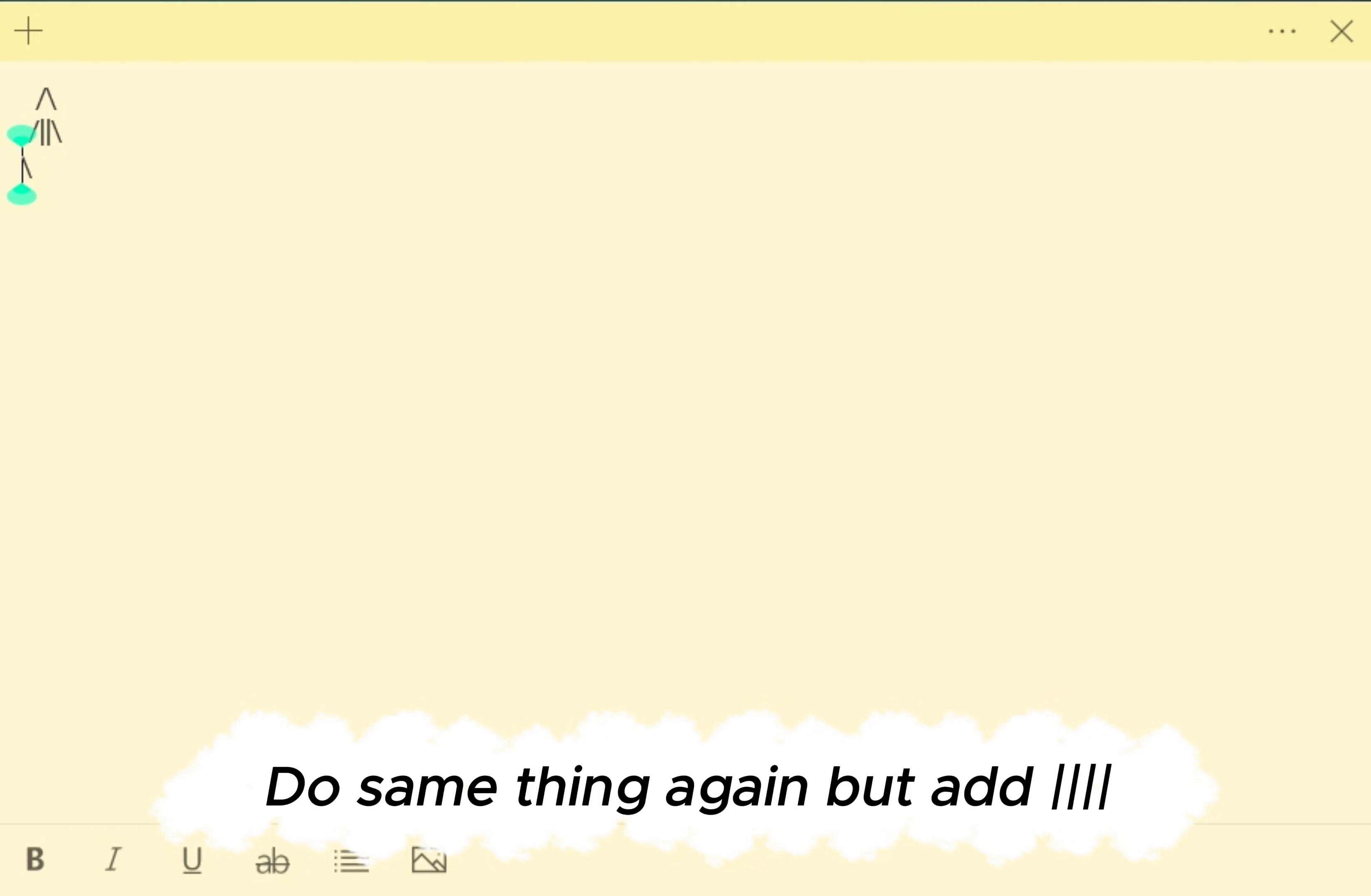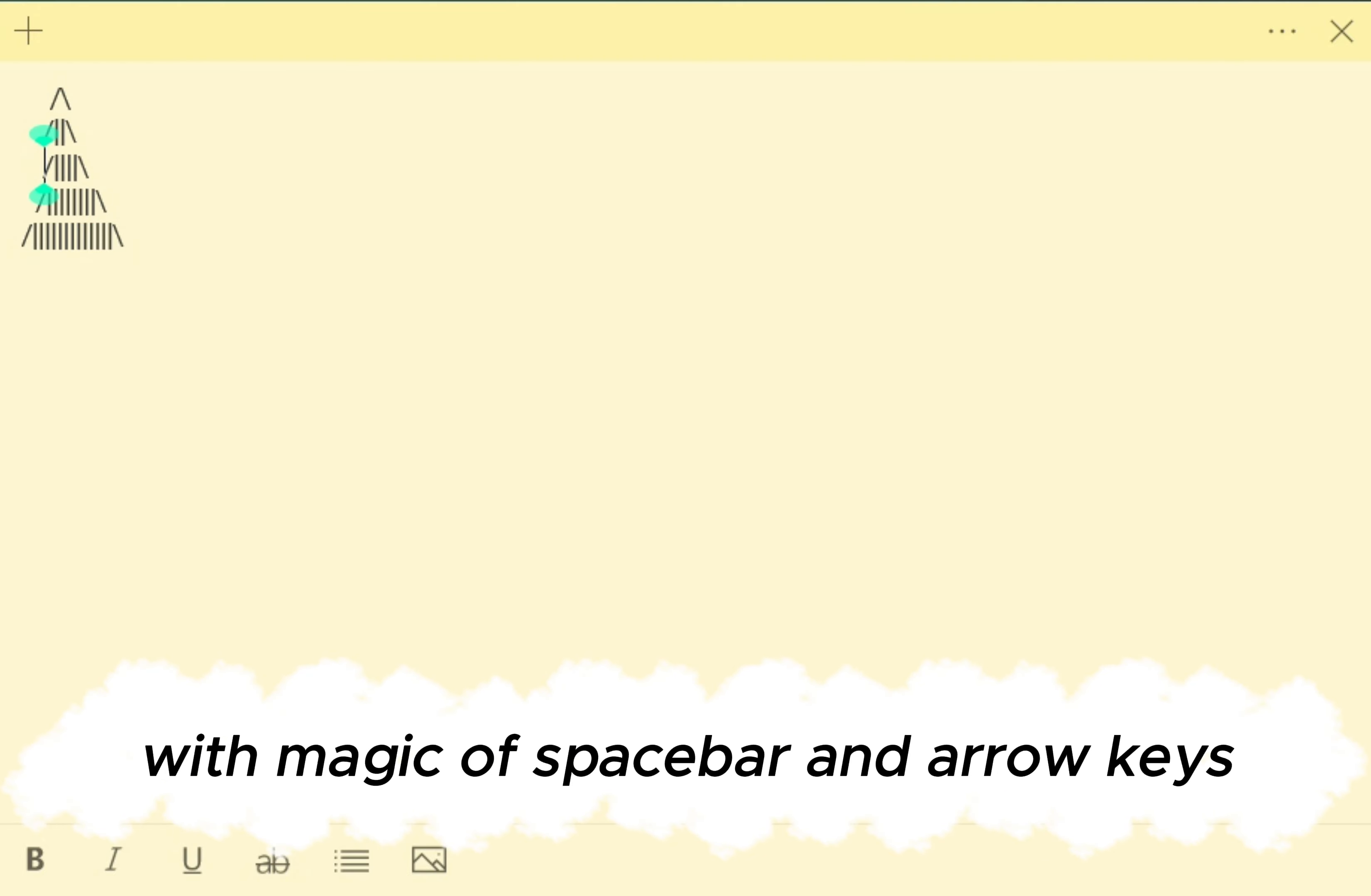Do same thing again but add, now go down, add eight. Don't forget to reposition your symbols, use arrow keys and space bar. Now add 13. We will now assemble our tree with magic of space bar and arrow keys. Good job!